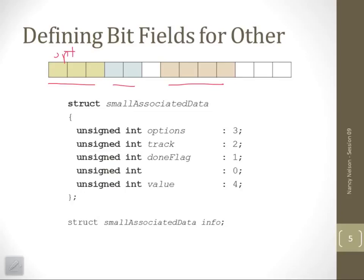Then for track, I want 2 bits. So this one would be track. Then I want a done flag, so I have 1 bit here. This would be done.